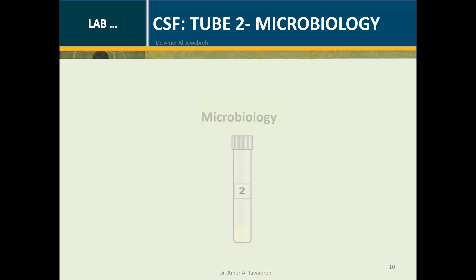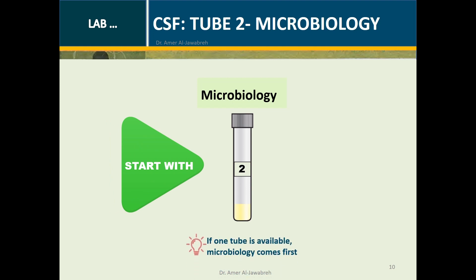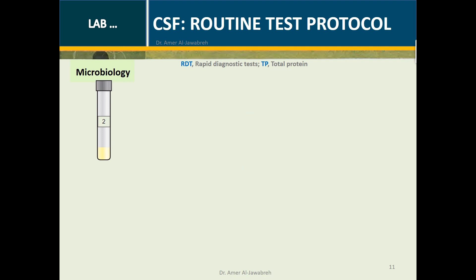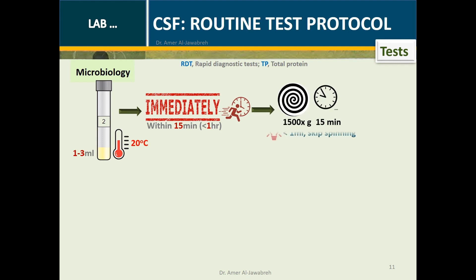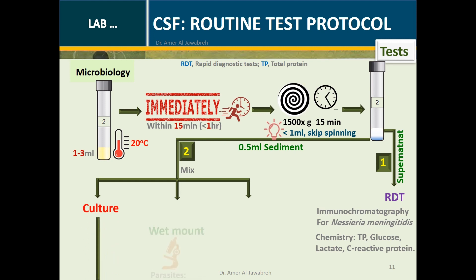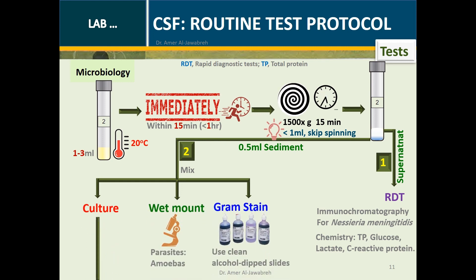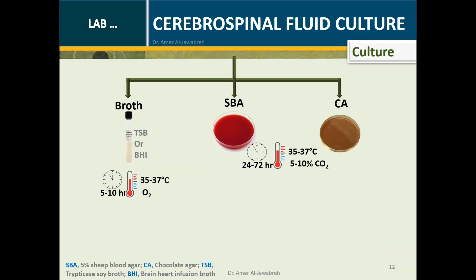CSF Tube 2 — Microbiology: Always start with Tube 2. If only one tube is available, microbiology comes first. At room temperature, immediately spin at 1500G for 15 minutes. If volume is less than 1 mL, skip spinning. Take the supernatant for RDTs and chemistry; 0.5 mL of sediment is plated on culture media and spread on clean slides for wet mount and gram stain.